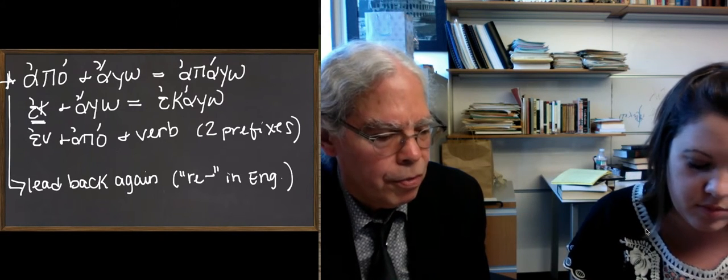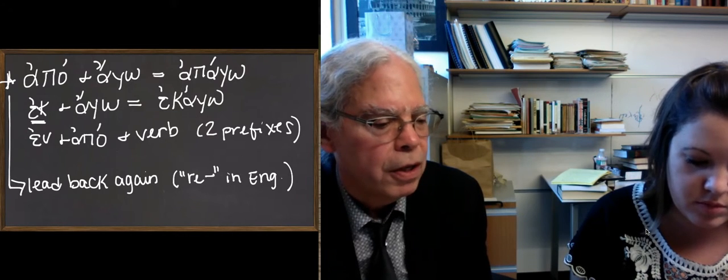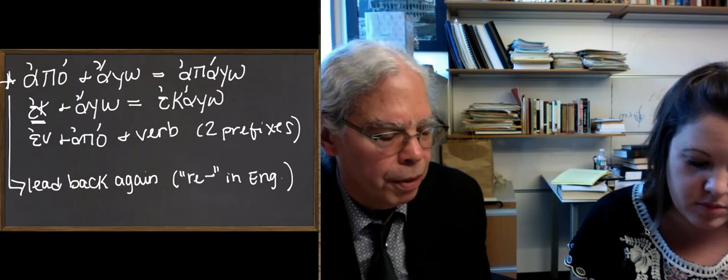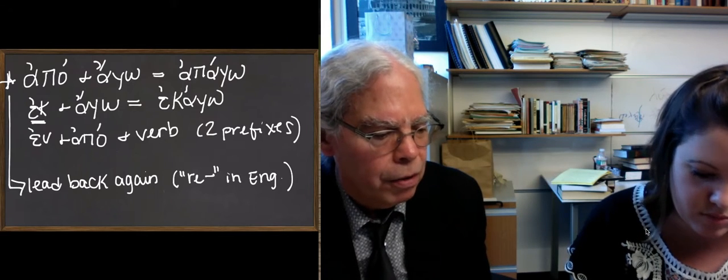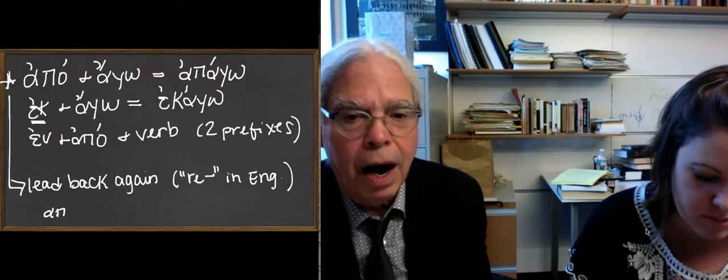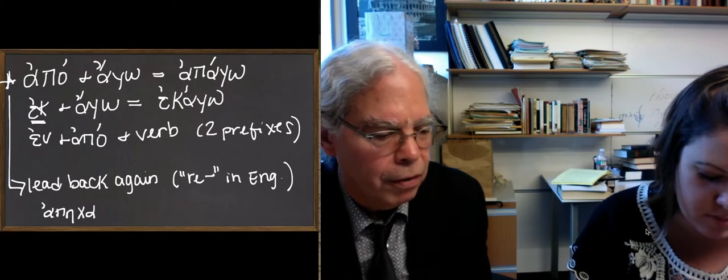The other two rules are this, that the accent never goes past beyond the verb. Okay? So for example, the perfect of apago is apecha, right? It's kind of an aspirated perfect, the root of ago, with an eta,